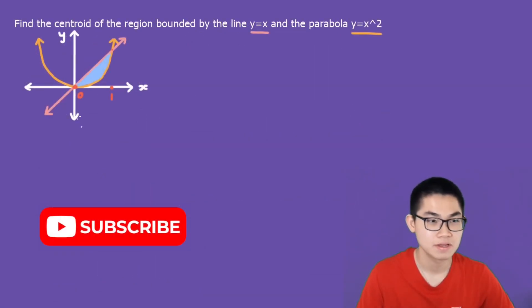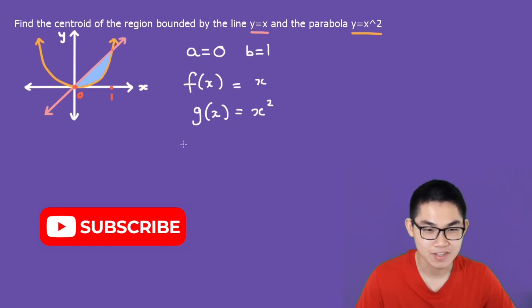Let's do one last problem. Find the centroid of the region bounded by the line y equals x. That's the pink line. And the parabola y equals x squared, and that's the yellow parabola. So in this example, a is equal to 0, and b is equal to 1. What is f(x)? f(x) is the upper function, and we want to find a centroid of the blue shape here. And obviously, the upper function is the pink line, which is simply x. g(x) is the lower function. That's going to be the yellow parabola, which is x squared. So go ahead and use these values, plug into the formula. At the end of the day, the answer is x-bar, y-bar is equal to 1/2 and 2/5.